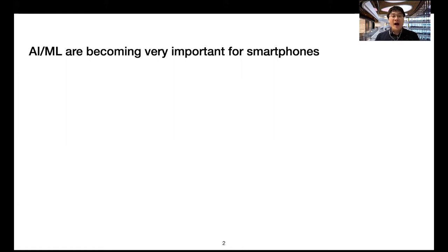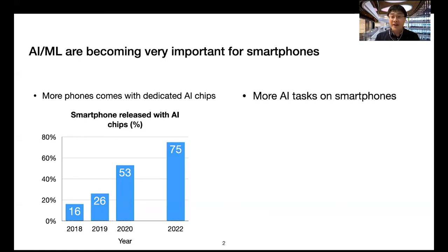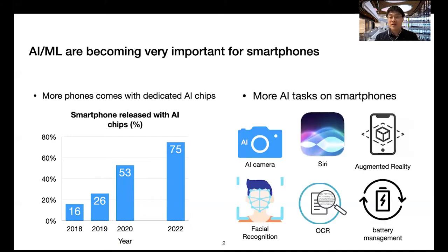AI and machine learning are becoming very important for smartphones. According to marketing research, by the year 2022, smartphones released with AI chips will grow to 75%. At the same time, there are more AI tasks on smartphones, including AI camera, voice assistant, augmented reality, facial recognition, OCR, and even battery management.